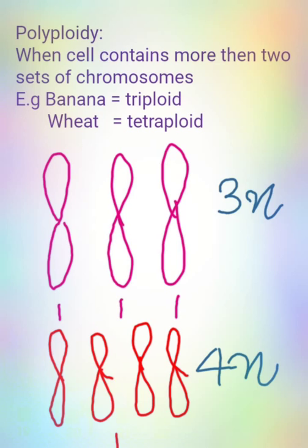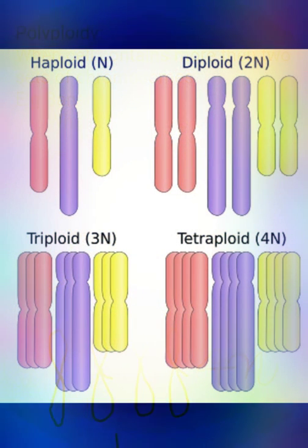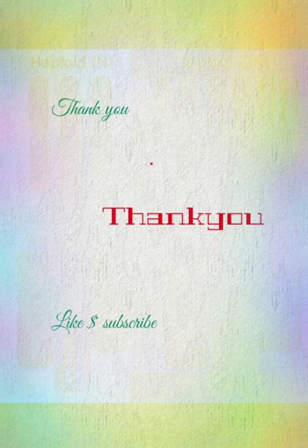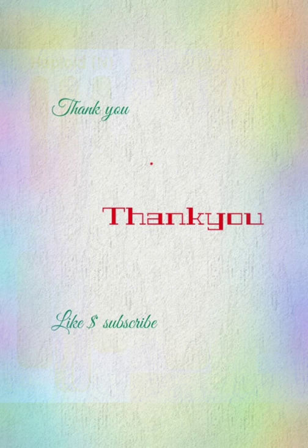Here is a summary diagram of the chromosomes. The first one is haploid — the orange, purple, and yellow chromosomes are each present as single copies. In diploid they are present in double copies. In triploid, three copies of each chromosome are present. In tetraploid, four copies of each chromosome are present. If you like my lecture please subscribe to my channel, and thank you.